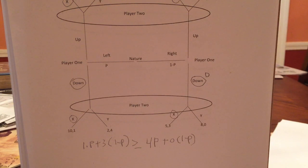Sorry, that's the inequality that has to hold for player two to play X if down is played. And recall, the only possibility of a pooling equilibrium is if player two responds to down with X.